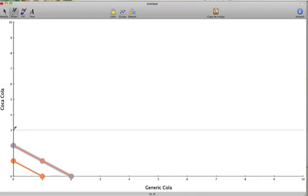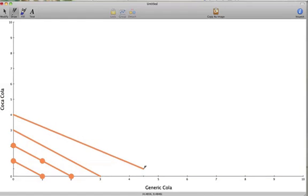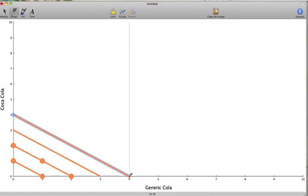Our third indifference curve will run from three Coca-Colas to three Genericolas. And we can construct even more indifference curves. The indifference curves for perfect substitutes will be straight lines.